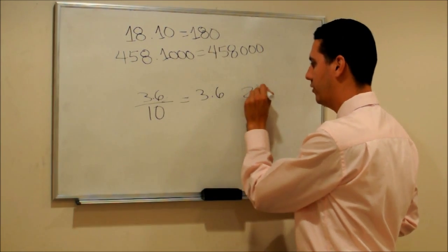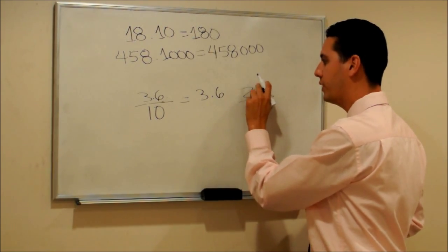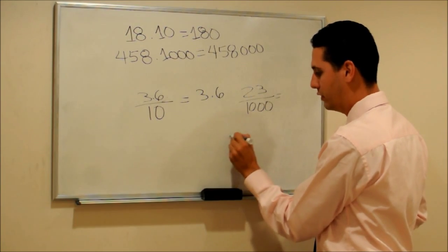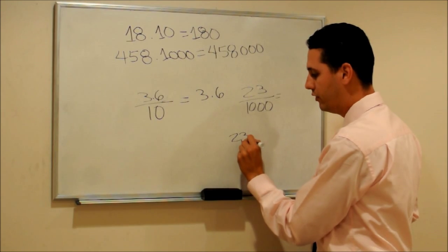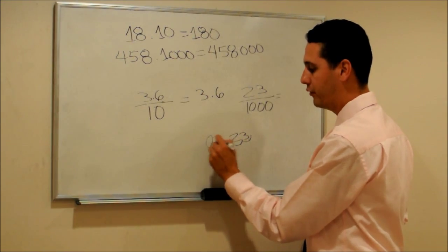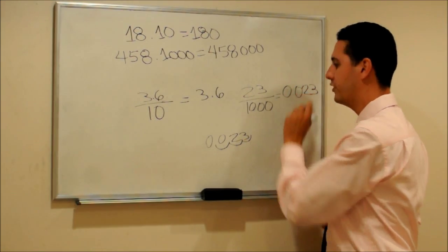What if we want to do 23 divided by 1000? So the answer would be the 23. We have to move 3 places to the left and we have to fill the rest with zeros, right? So the answer would be 0.023.